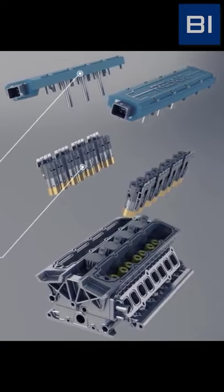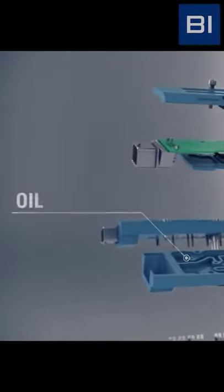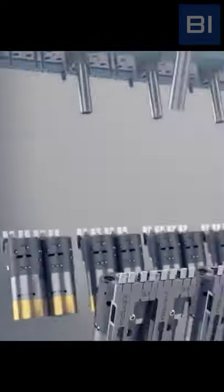With a camless engine, fuel injection and exhaust timing are directly controlled by an engine control unit and can be constantly changed and adjusted without stopping the engine.